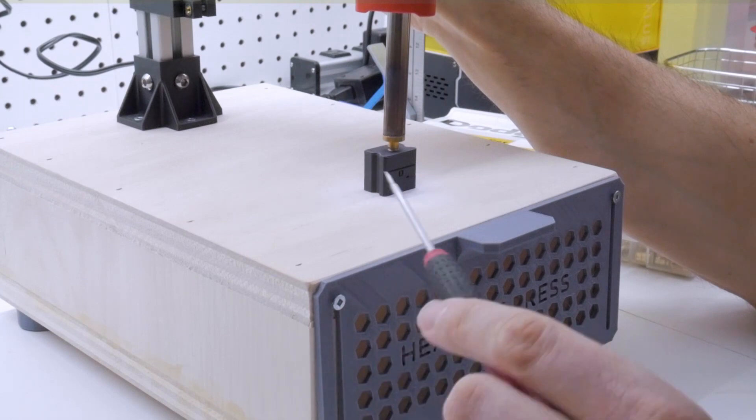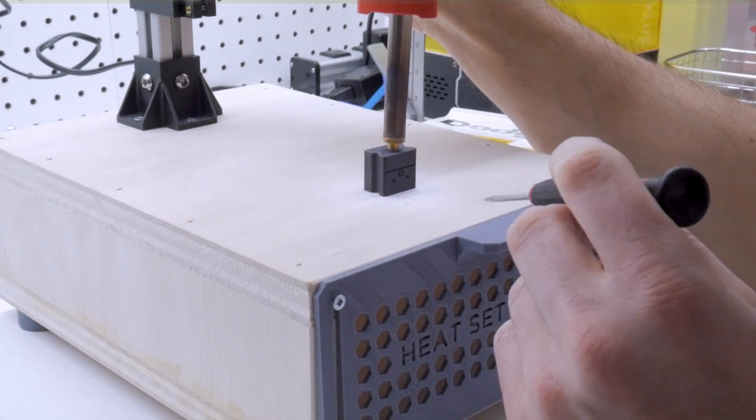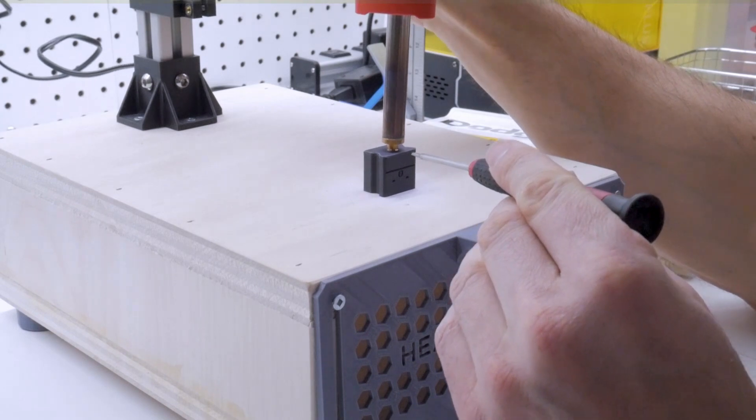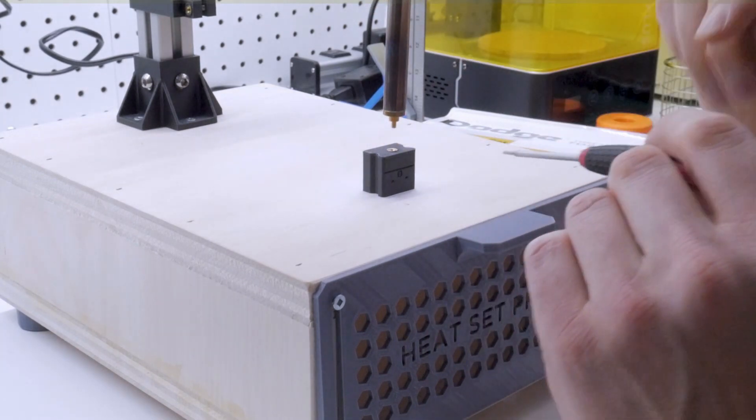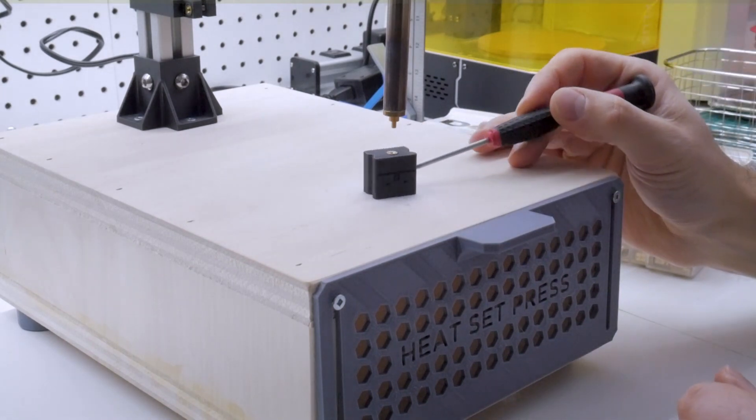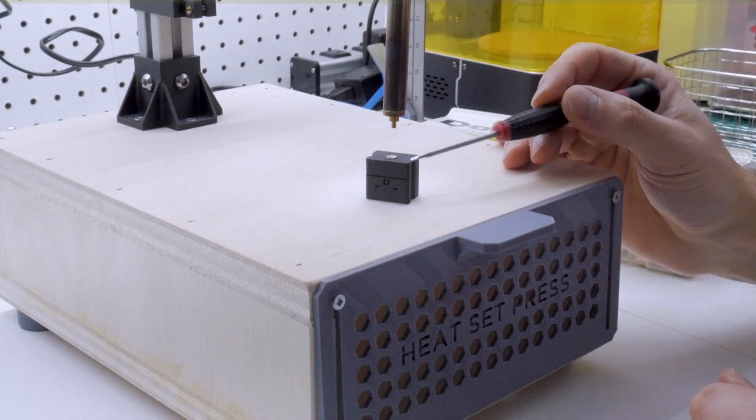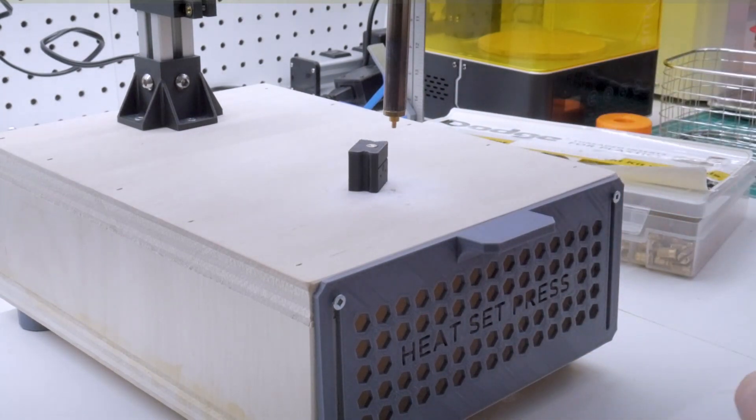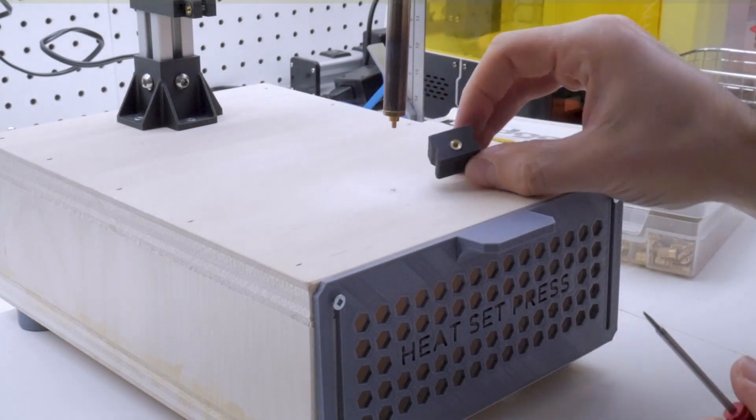If you don't do a lot of this, you can just press it in with a regular soldering iron, but if you do a lot of 3D printing and plan on doing a lot of heat set inserts for your parts, you might want to consider building one of these. It really helps you install these things quickly and nice and straight into the part so they don't go in crooked.